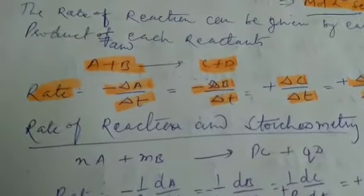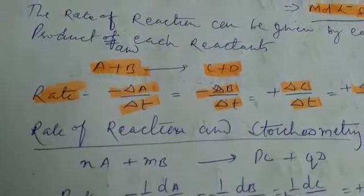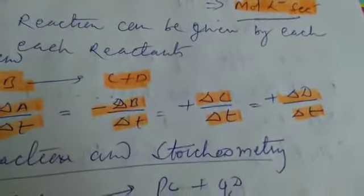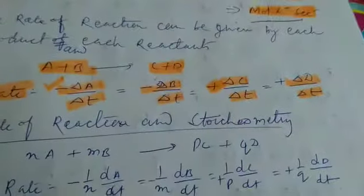We know that the concentration of reactants decreases with time, so negative sign is given here. Whereas in case of products, the concentration increases, so positive sign is given in rate of reaction.